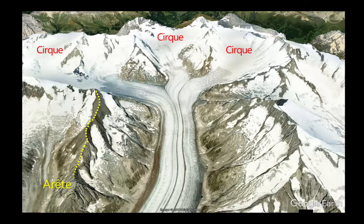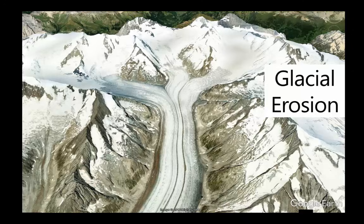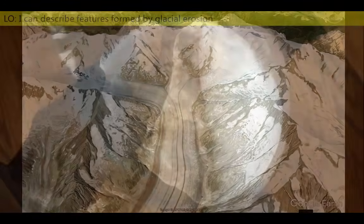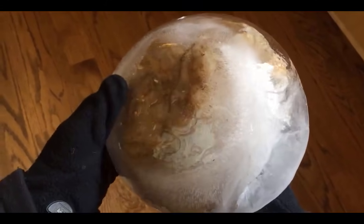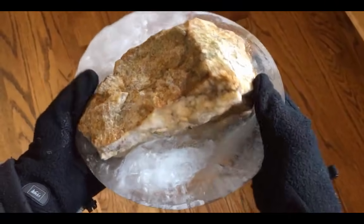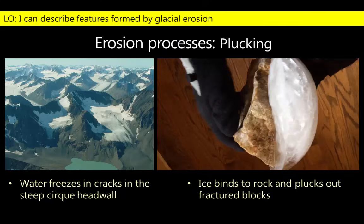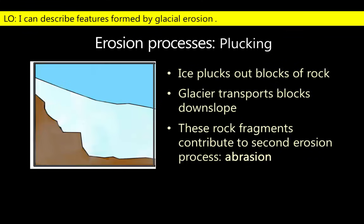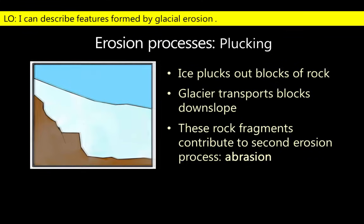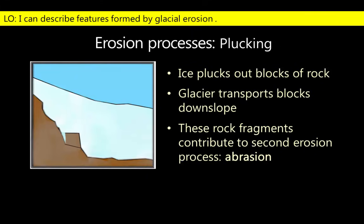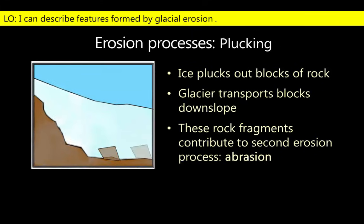Glacial erosion can occur where ice is in contact with rocks. When ice freezes around a large rock in nature, it results in one type of glacial erosion known as plucking. Plucking happens when water invades cracks in the rock; as the water turns to ice, it binds onto the blocks of rock. The motion of the glacier plucks the blocks of rock out of the cliff face, embedding them in the moving mass of ice and transporting them downslope.